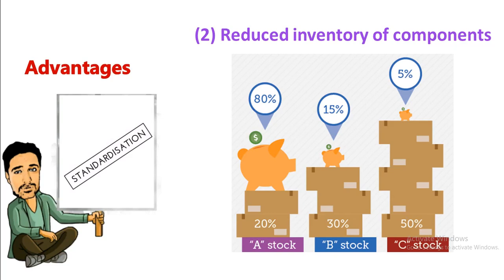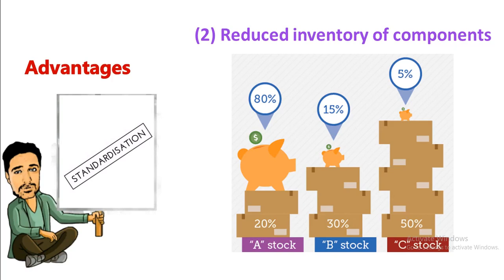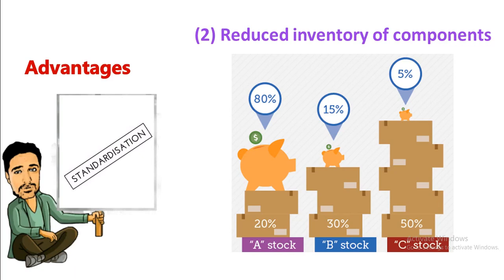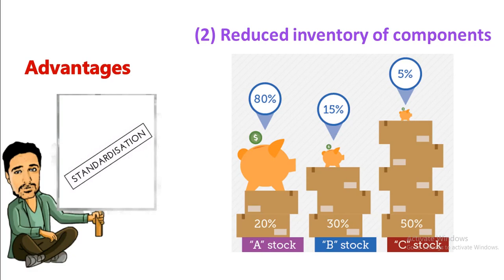The second advantage is reduced inventory of components. If we are using standard parts, we don't need to store more parts as inventory in the industry, because standard parts are easily available in the market. So unnecessary storage of inventory of components will be reduced.